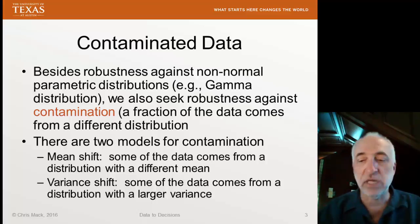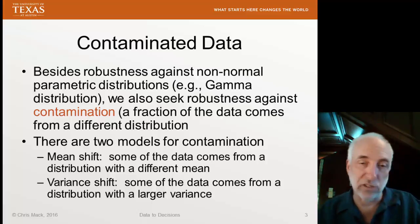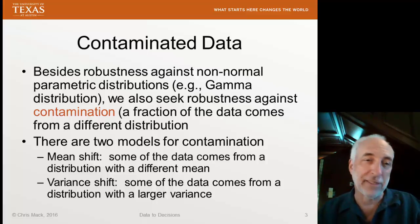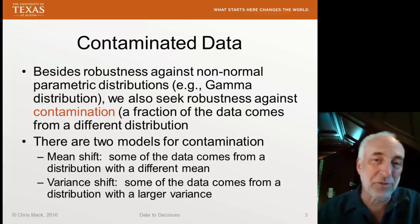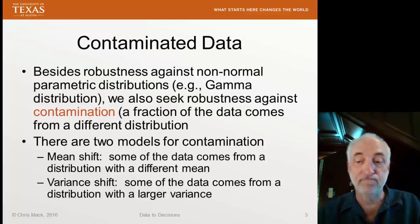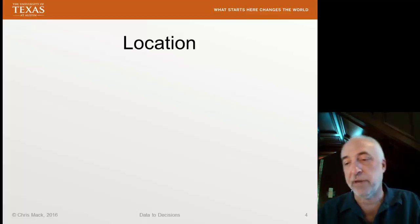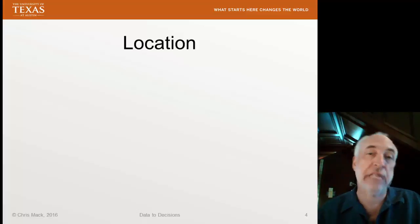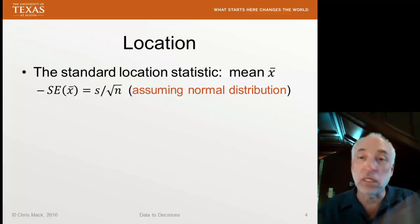We might see this topic coming up again. The idea of contamination, or bad data points — and I don't mean to be judgmental; data is not morally wrong — so sometimes we like to use less value-laden terms when we talk about data. All right, let's look at some location parameters. Location estimators are estimations of central tendency of our distribution.